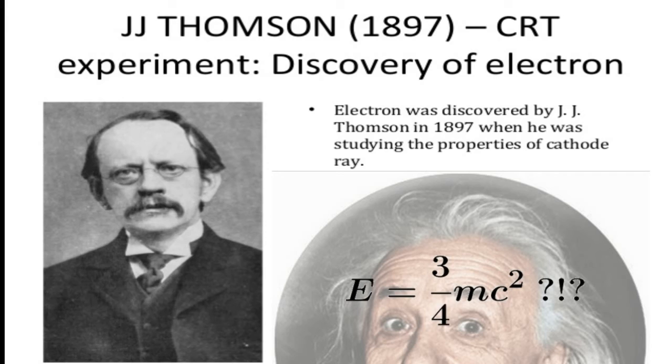But J.J. Thomson, when he produced E equals three quarters MC squared, he was doing it so in respect to the charged spherical conductivity when they were dealing with electrical or electromagnetism. This is what they did.